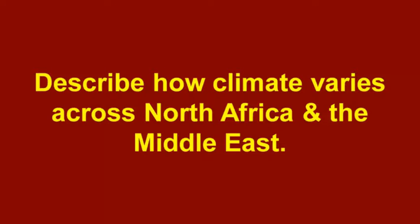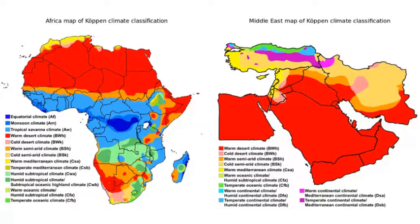Now I'm going to describe how climate varies across North Africa and the Middle East. It doesn't have as much complexity as Northern America and Sub-Saharan Africa. Why not? Because it's mostly a B climate. We can see in North Africa, but also in the Middle East on both the left and the right, we see a lot of red. And if we go to the key, red means it's a desert — it's a B climate. We're mostly focusing here on A, B, C, D, and E climates.